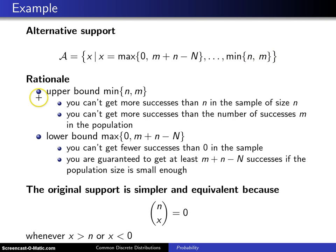So let's start by looking at the upper bound, which is the minimum of n and m. Here's the thinking. You can't get more successes out of your draws from that urn than n when you take a sample of size n.